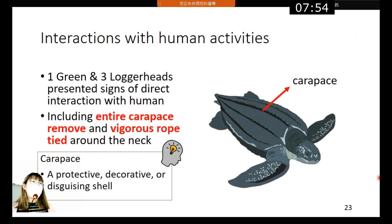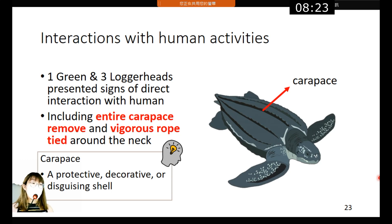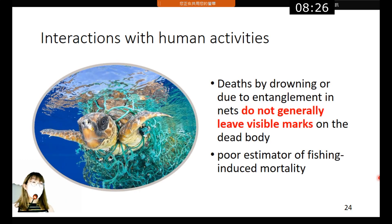Four of the 92 sea turtles — one green and three loggerheads — showed signs of direct interaction with humans, including the entire carapace removed and a rope tied around the neck. These things happen because humans want to sell turtle shells for decorative purposes in the informal market. Unfortunately, the death of sea turtles is quite difficult to determine because death by drowning or entanglement in nets does not generally leave visible marks on the body.